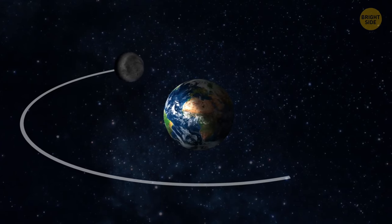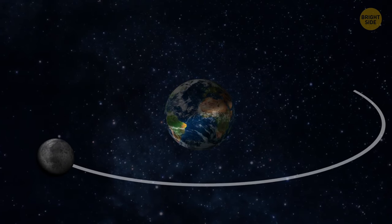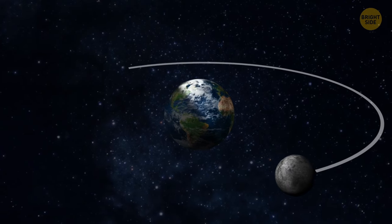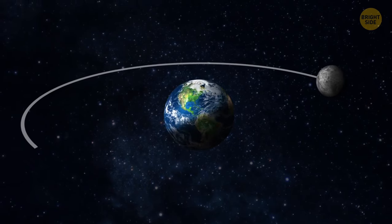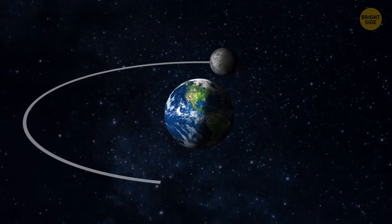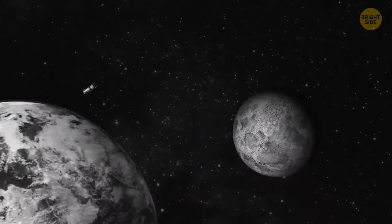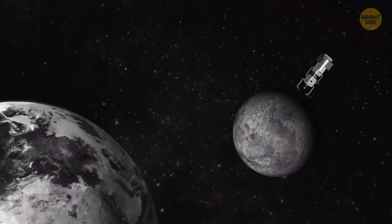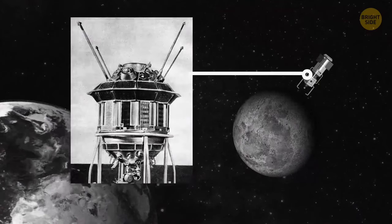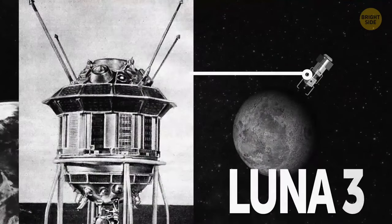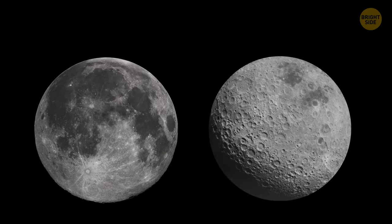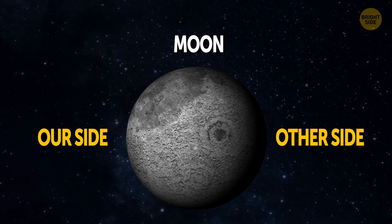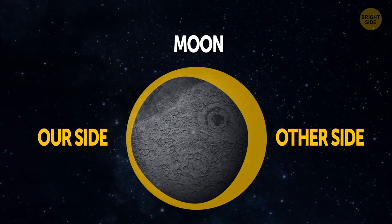People always see the same side of the Moon. The Earth's gravitational field makes the Moon spin around its axis slower. That's why it takes the Moon the same time to rotate around its axis as to orbit around the Earth. It was only in 1959 that people could finally see the other side of the Moon, thanks to a photo taken by the Russian spacecraft Luna 3. The other side of the Moon is more mountainous than the one we see from Earth. It can be explained by the Earth's gravity, which made the crust on the visible side of the Moon thinner.